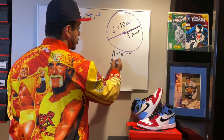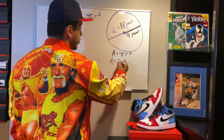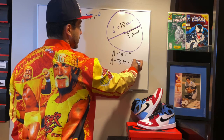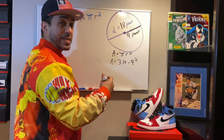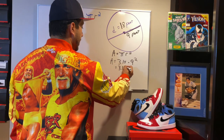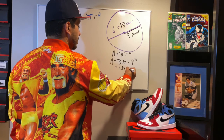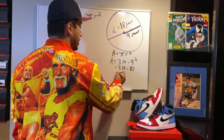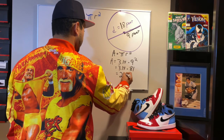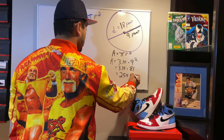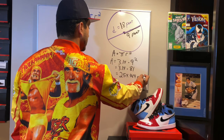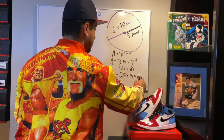I will then use the estimation of pi, 3.14, and multiply it times 9 to the second power. 9 to the second power is 9 times 9. Another step: I now have 3.14 times 81. 3.14 times 81 equals 254.469 feet squared.